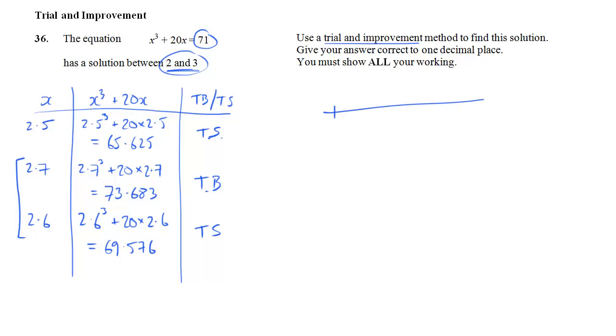And because I want my solution to one decimal place, one of those numbers is going to be my solution. And my job now is to find out which of those two is it closest to. And the only way to do that is to try a test point exactly halfway between. So, 2.65 is going to be that test point.